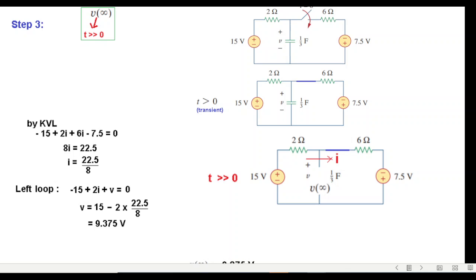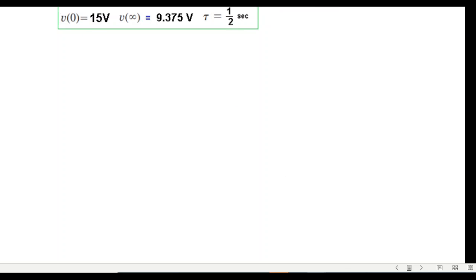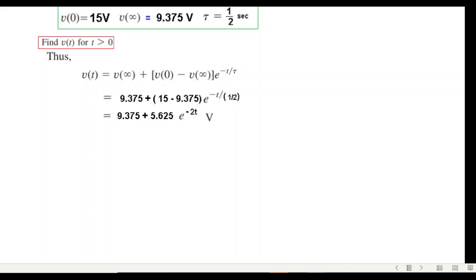Now that we have got all three parameters, we just plug in the values in the equation for t greater than zero. This was the equation. Plugging in the values, we get our final equation.